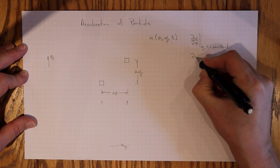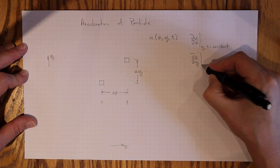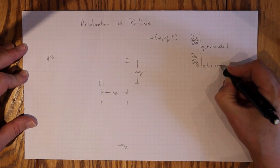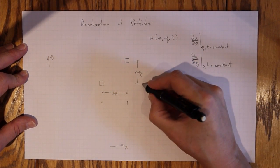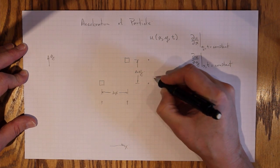Then there's ∂u/∂y with x and t held constant. That accounts for the difference in the u velocity over the y direction.